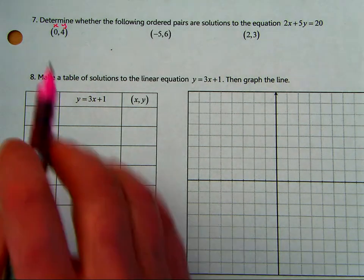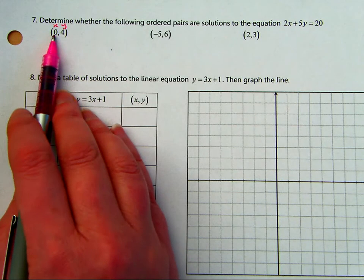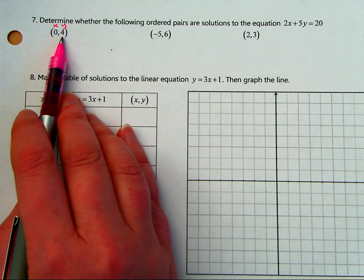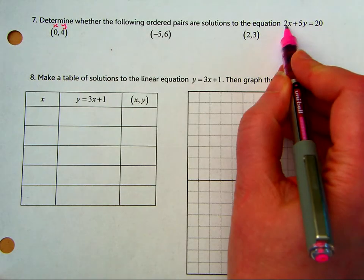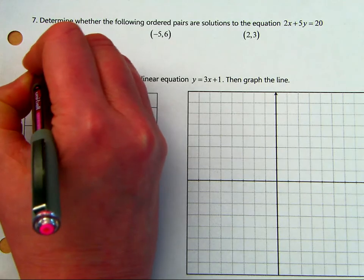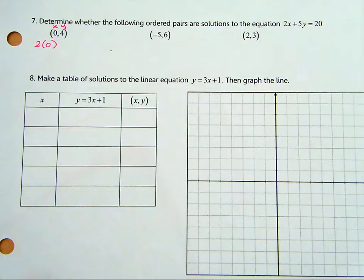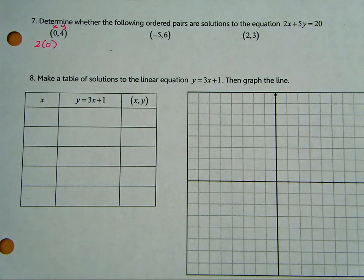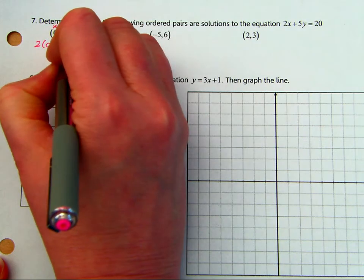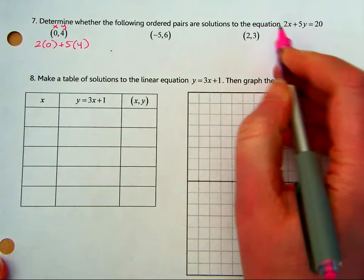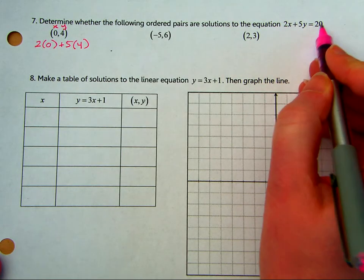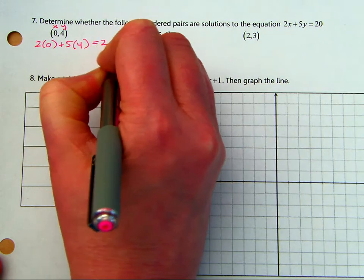And so I labeled my x-coordinate as the first one and the y-coordinate as the second one. Let's write out our equation. 2x would be 2 times 0. You can use parentheses or a dot. Either one is fine. And I'm going to keep going plus 5y. This one's in a different format than our other one.